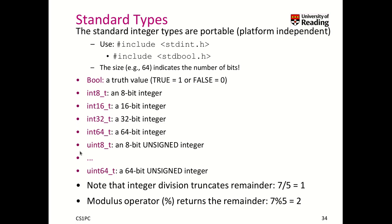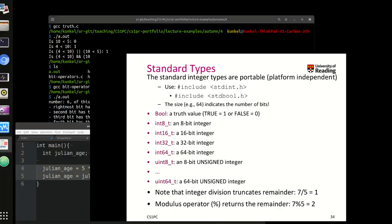For all these integer data types, note that if you do an integer division, you always truncate the remainder. So 7 divided by 5 is 1 because 1 times 5, but 1 times 5 isn't 7. The reason is that you have some remainder. And to get the remainder, you have to use this percent operator, which is the modulo operator. So 7 modulo 5 equals 2. Let's try this out.